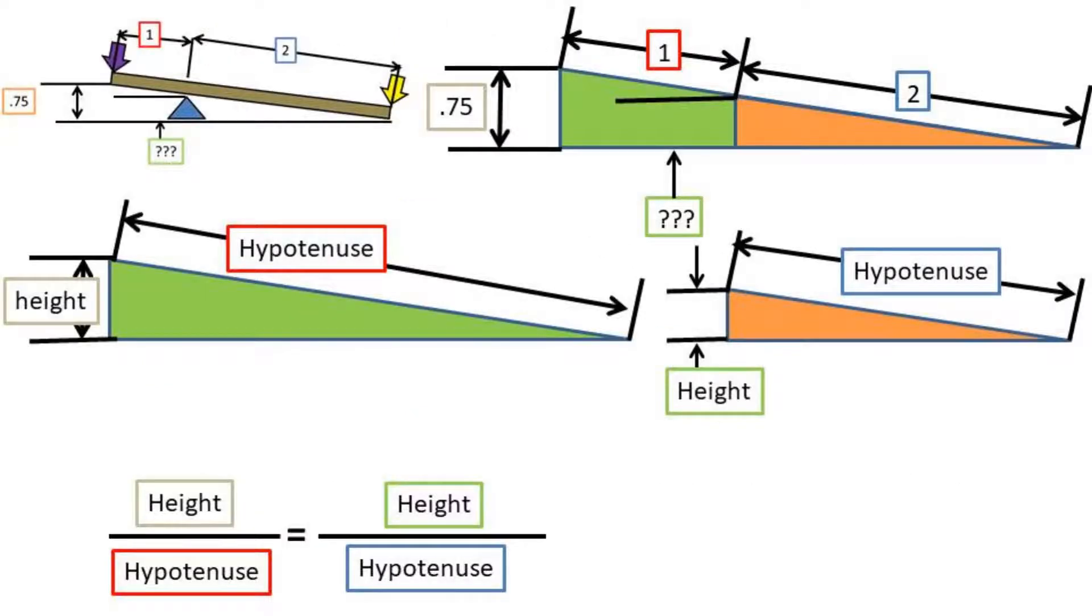The way we will solve this problem is by using the principle of similar triangles. The ratio of the height over the hypotenuse of one triangle will be the same as the other triangle if the angles of both triangles are the same.